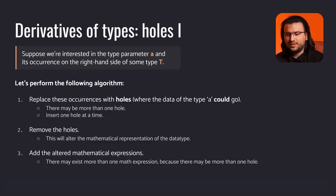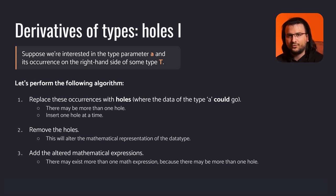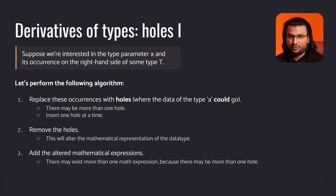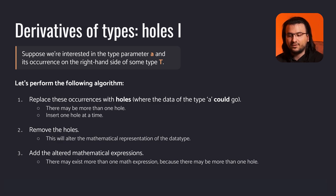Suppose we're interested in the type parameter a and its occurrences on the right-hand side of some type t — in other words, the definition of that type. Let's perform the following algorithm. First, we replace these occurrences with holes, where data of type a could go; there may exist more than one value of type a in a constructor, and therefore more than one hole per constructor. Second, we remove the holes — this alters the signatures of the constructors and therefore the mathematical representation of the data type. Finally, we combine all the altered constructors into a single sum type.